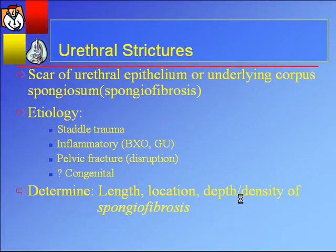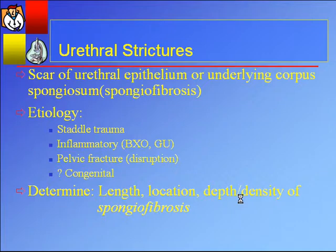Urethral stricture, known for about 50 years as the scar of urethral epithelium, has in the last 20 to 30 years evolved to also include a scar of the underlying corpus spongiosum. Unless that scar of the sponge is addressed, stricture treatment will generally fail. Most strictures are probably idiopathic, but straddle trauma accounts for the majority of them. Inflammatory strictures, though much less common now with antibiotics and less gonococcal disease, BXO does play a big role. Pelvic fractures cause bulbomembranous disruption, and there is also the rare congenital stricture.